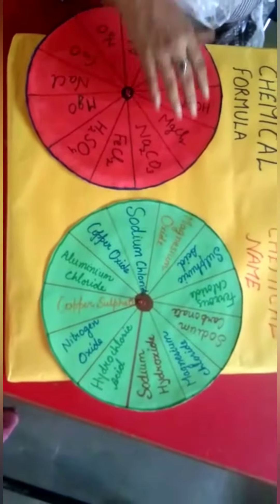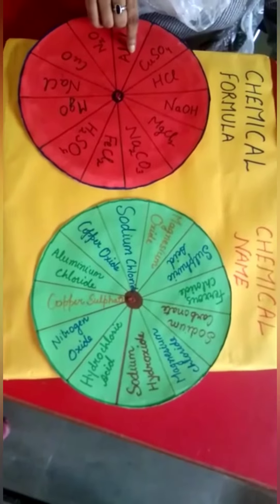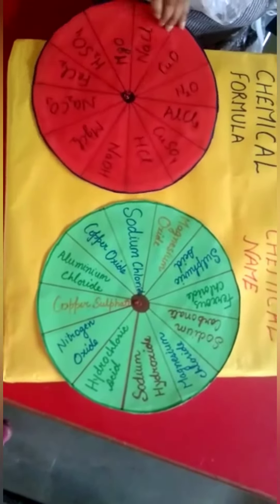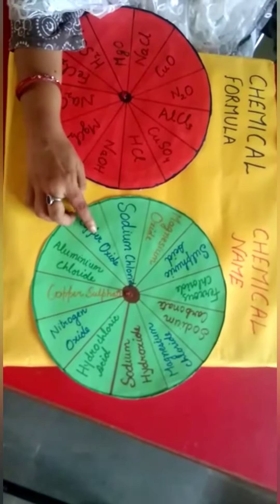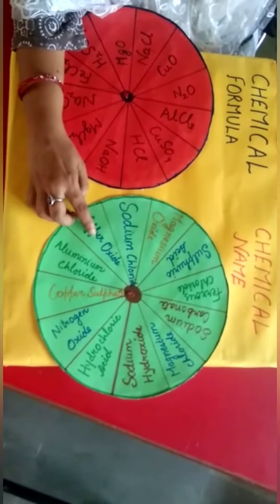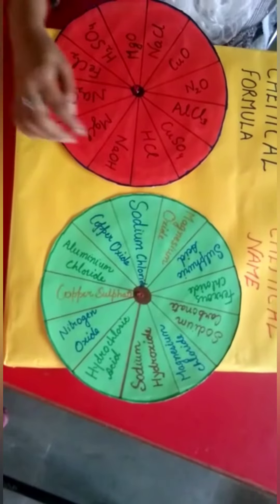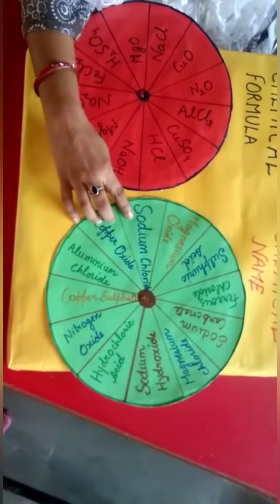For example, there are two rotating discs. From one disc we get the chemical formula and from the second disc we get the chemical name. For example, the student has to find the formula of sodium chloride.